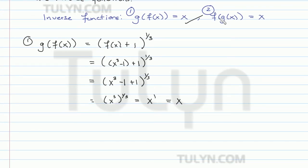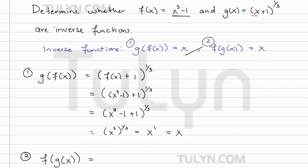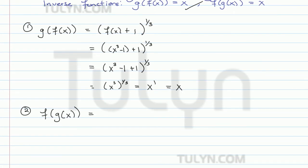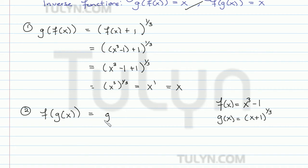Now we want to see if f(g(x)) also equals x. For part 2, we evaluate f(g(x)), which means f(x) with x replaced by the function g. In f(x) = x³ - 1, wherever we see an x we replace it with g(x). So f(g(x)) becomes (g(x))³ - 1.